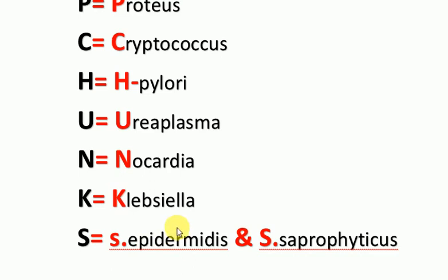S is for Staph Epidermidis and Staph Saprophyticus. Staph Epidermidis is a common flora of skin and less commonly of mucosa. It does not cause any pathogenesis in normal persons but it can affect immunocompromised patients. It is especially hospital-acquired in patients who have catheters or implants, as it is known for forming biofilm over implants or devices. Staph Saprophyticus is the leading cause of cystitis in young females.